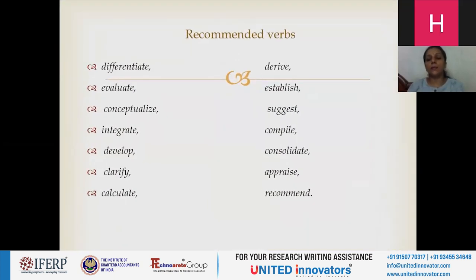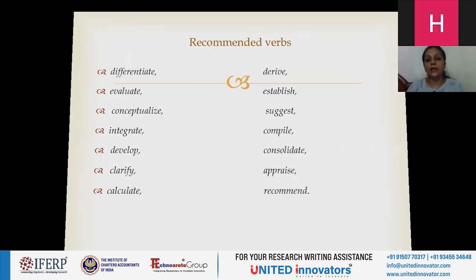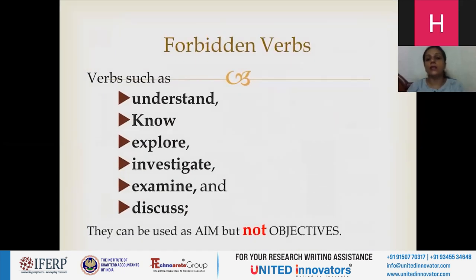Here are some recommended verbs one should use while writing a research article: differentiate, evaluate, conceptualize, integrate, develop, clarify, calculate, drive, establish, suggest, compile, consolidate, appraise, recommend. On the other hand, there are certain verbs one should avoid: understand, know, explore, investigate, examine, discuss. These can be used as an aim but not as an objective. If everybody already knows something, there is no need to write a research article about it. These are certain words we should avoid while writing.